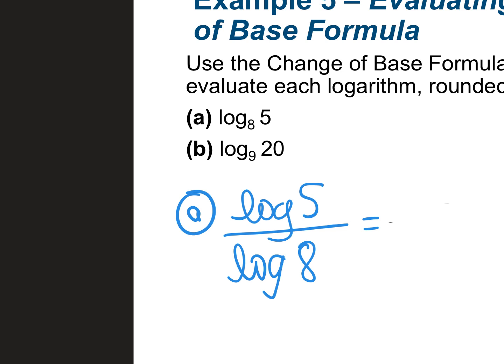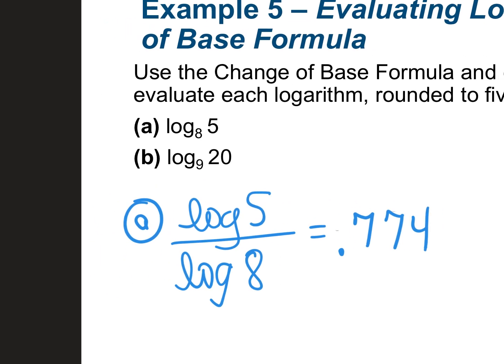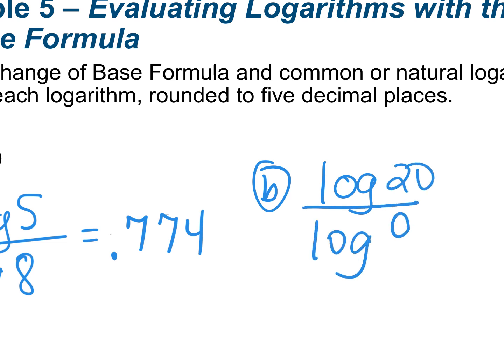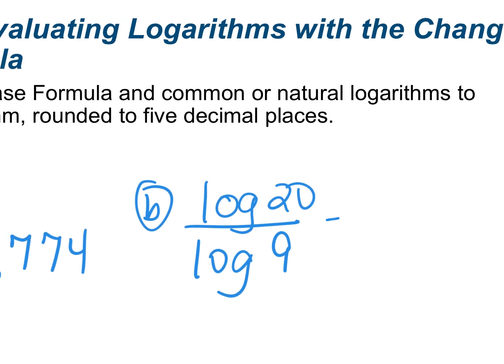For example A, log₈(5): enter log(5) ÷ log(8) — you get 0.774. For B, log₉(20): enter log(20) ÷ log(9). What do you get? 1.363. If you just hit log(5), you won't get the same thing as log base 8 of 5.